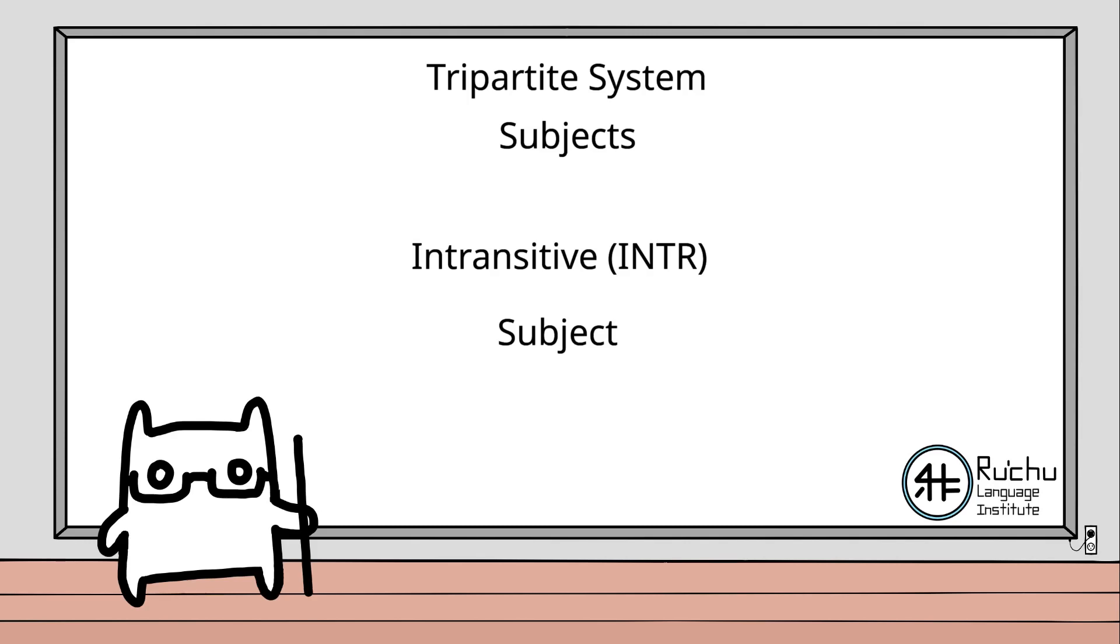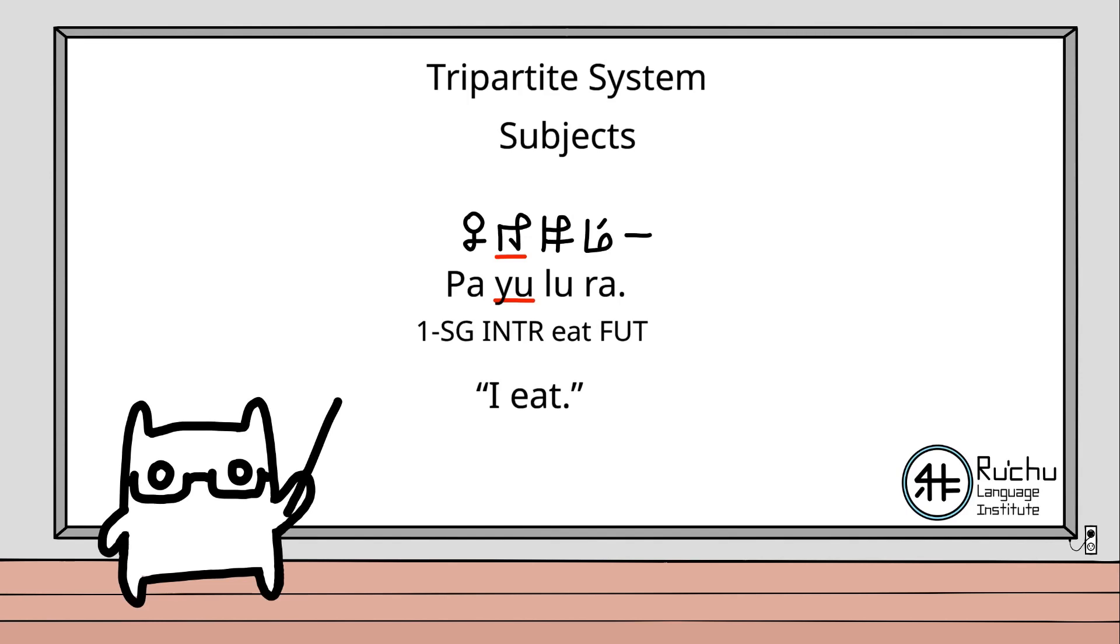Intransitive markers are used if the subject acts alone without an object. An example of this is the sentence I eat. Here, the intransitive marker 유 is used instead, since the subject does not act upon an object.